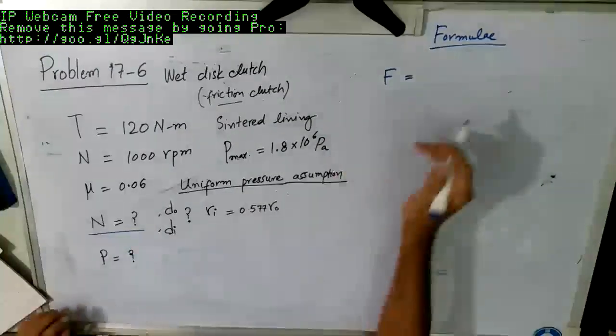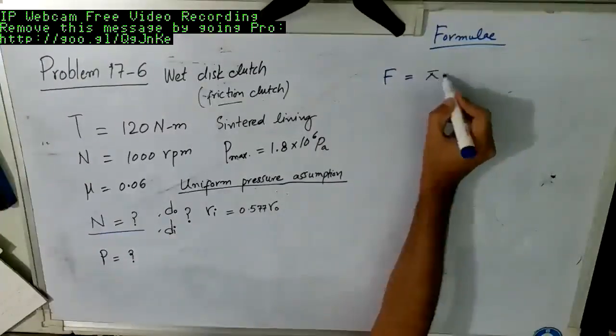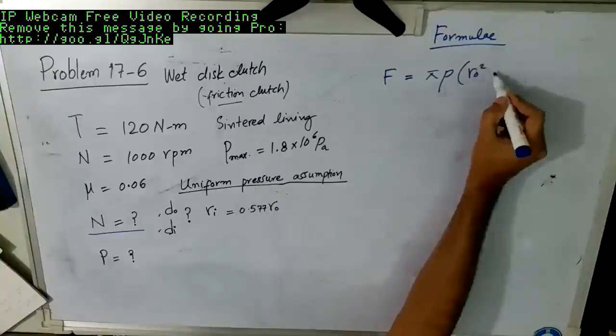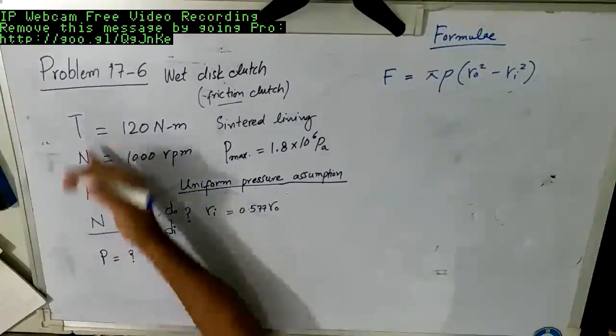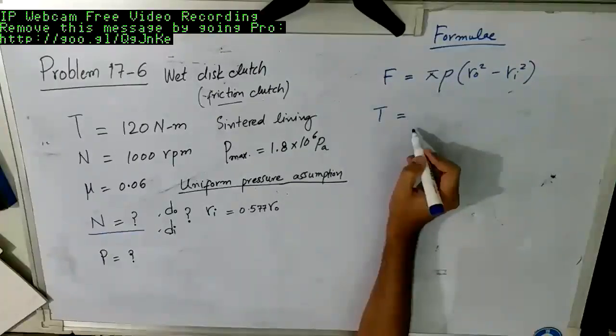So let us start. First of all, since we are given with the condition of uniform pressure, we should write down its formulas which we have already derived for our reference. In case of uniform pressure condition, the actuation force, the force that you apply in order to engage the clutch plates, that is F is equal to pi P into r outer square minus r inner square.